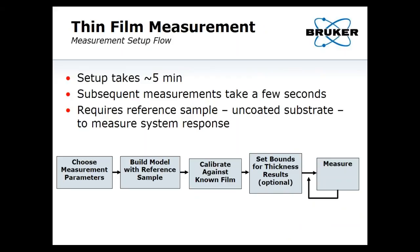For thin film measurements, this is a little more involved. You won't see two sets of fringes on screen because you can no longer trivially segment the top and bottom surface. Setup takes about five minutes. Subsequent measurements take a few seconds and require a reference sample, which is an uncoated substrate of the sort you're using under the film that you're looking at. You use that to measure the system response.